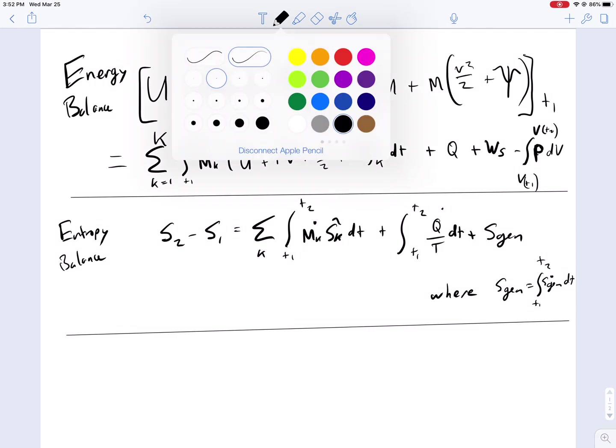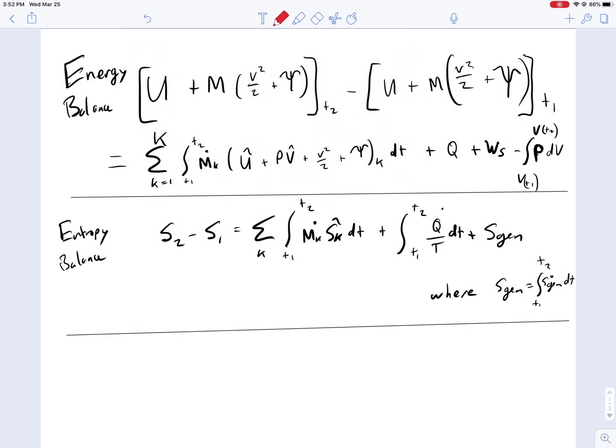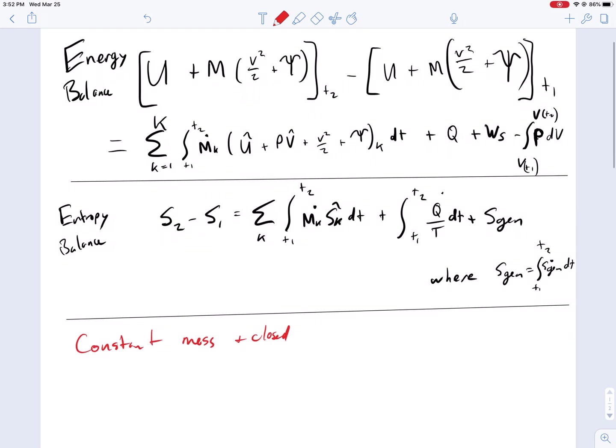This time we're going to start with a system at constant mass and closed. So it's not even a steady system, it's closed. And we're going to consider a system that has constant pressure and constant temperature.